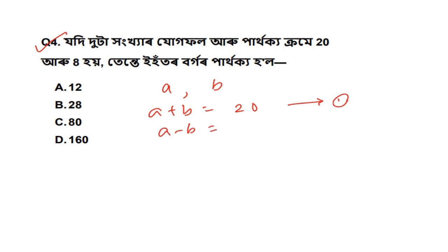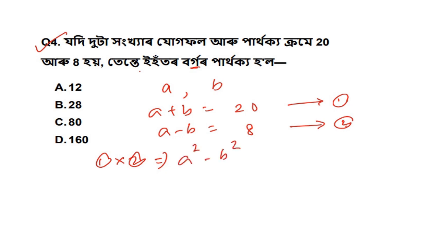A minus B is equal to 8. This is a bigger part: 1 into 2. A plus B into A minus B. A plus B into A minus B is equal to A squared minus B squared. 20 into 8 is 160. Option D.